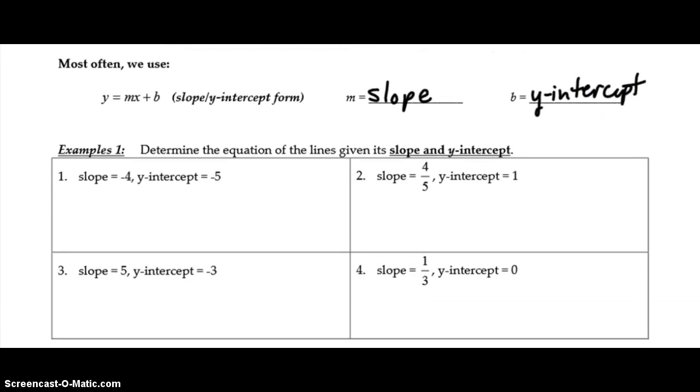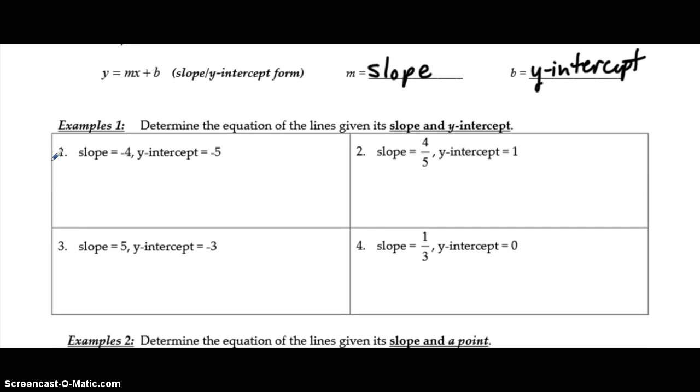So for the first set of examples, determine the equation of the line given its slope and y-intercept. So if we have a line that has a slope of negative 4 and a y-intercept of negative 5, we simply substitute the slope in for m and substitute the y-intercept in for b. So the equation here would be y equals our m value times x plus b. Since the b is negative, we can just write minus 5.